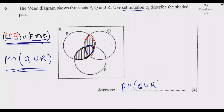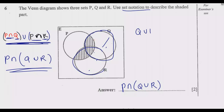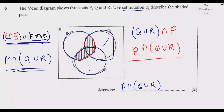You can also get the same answer by looking at it from a different perspective — the quicker way. If you combine this set and this set, you get Q union R. Then you intersect Q union R with P. What remains is this region, which gives the same answer: P intersection Q union R, written as P ∩ (Q ∪ R). This is how you answer this question to get the two marks.